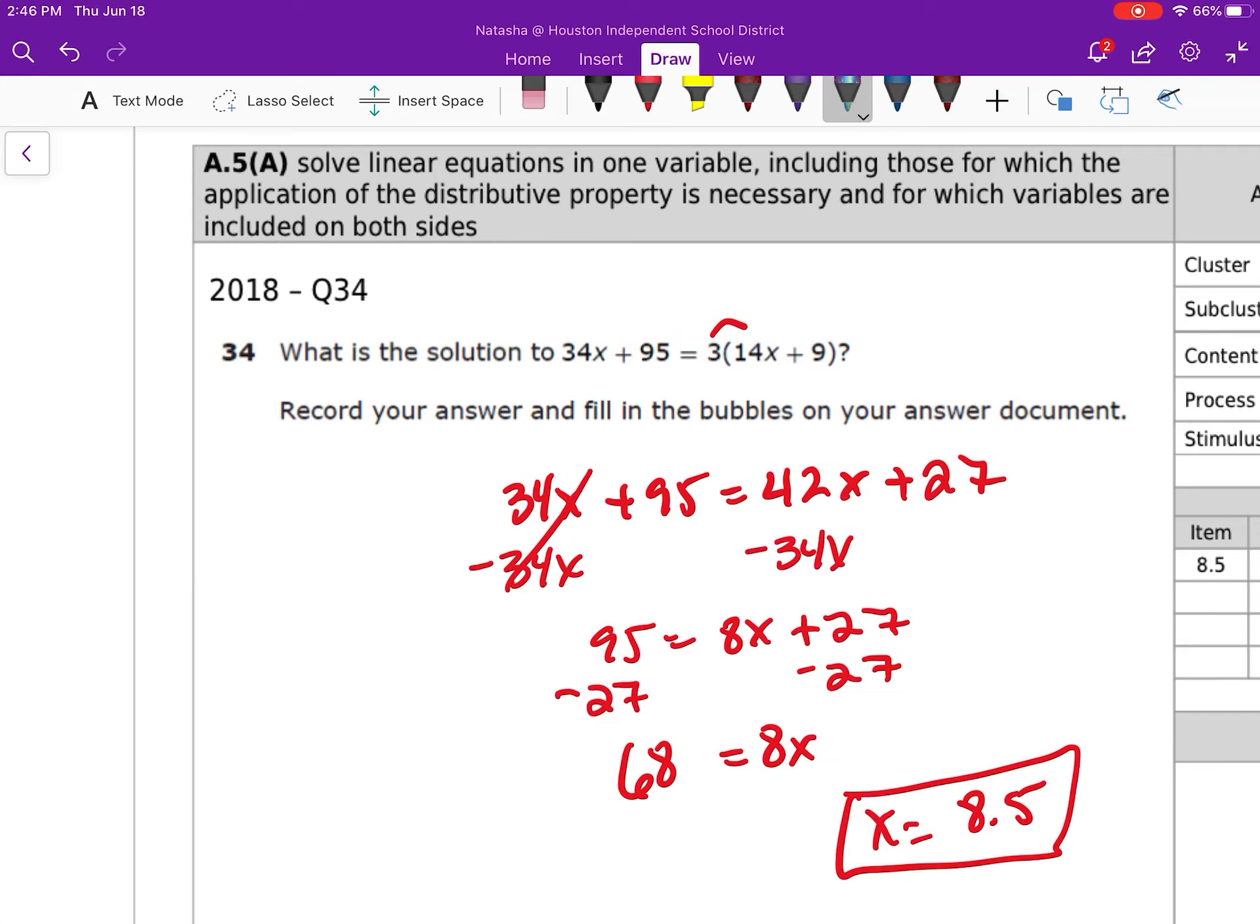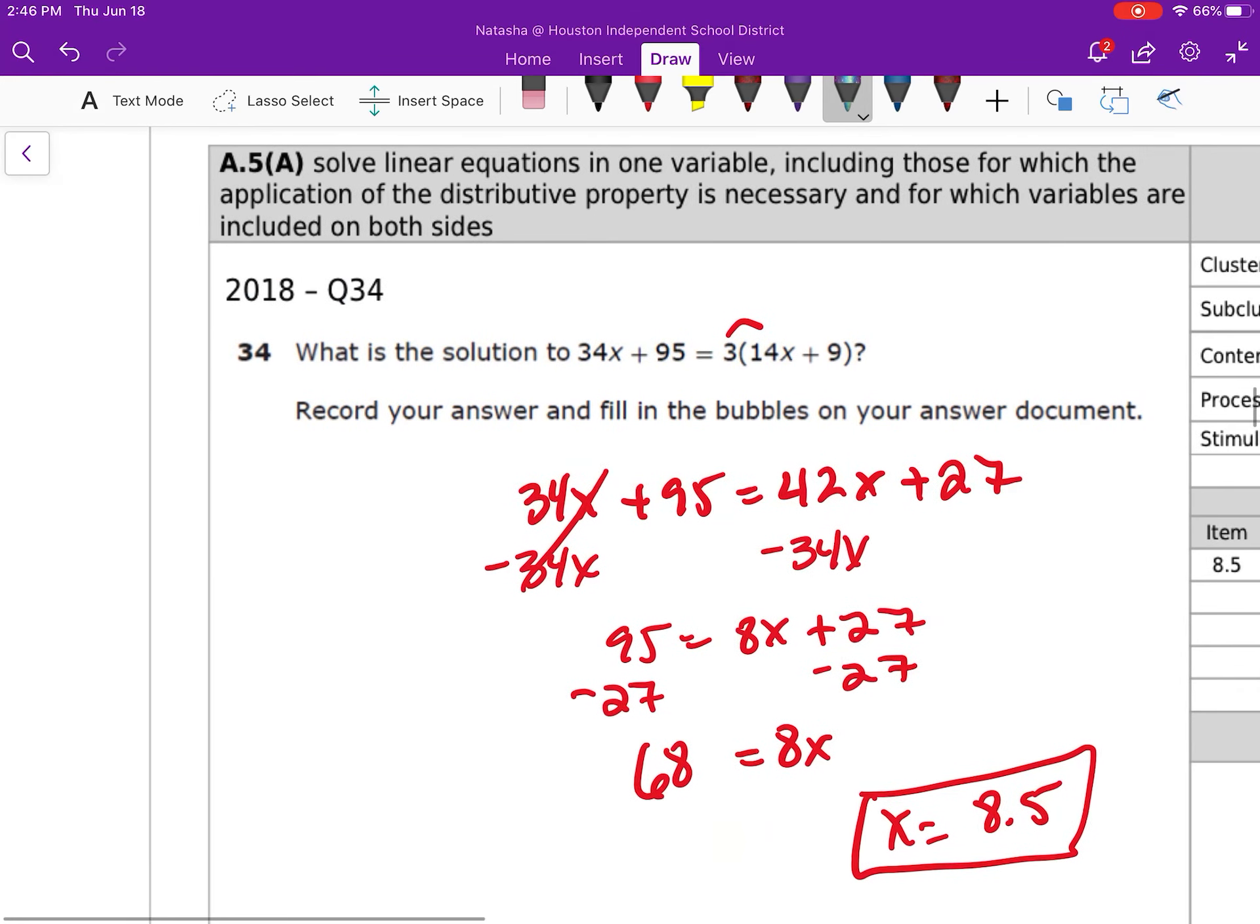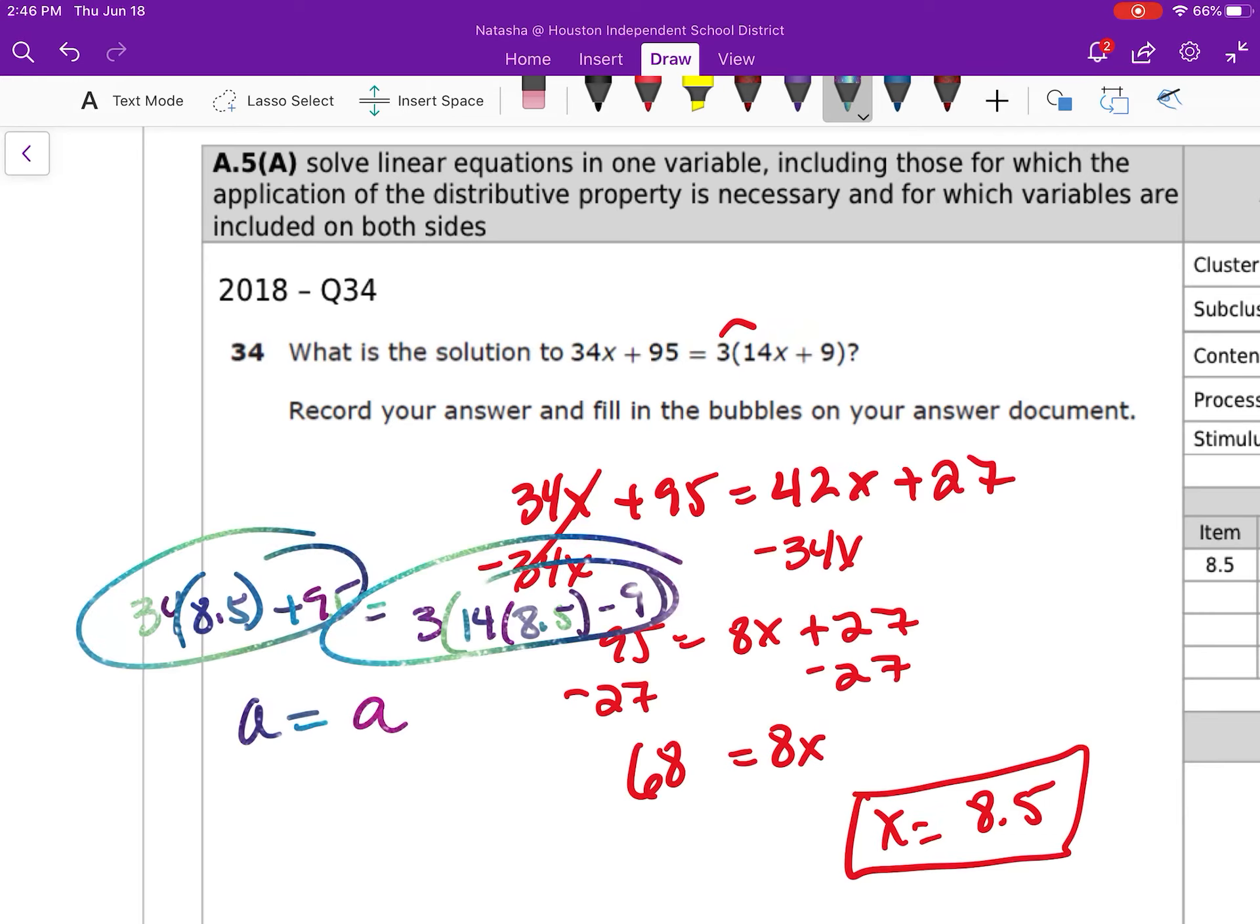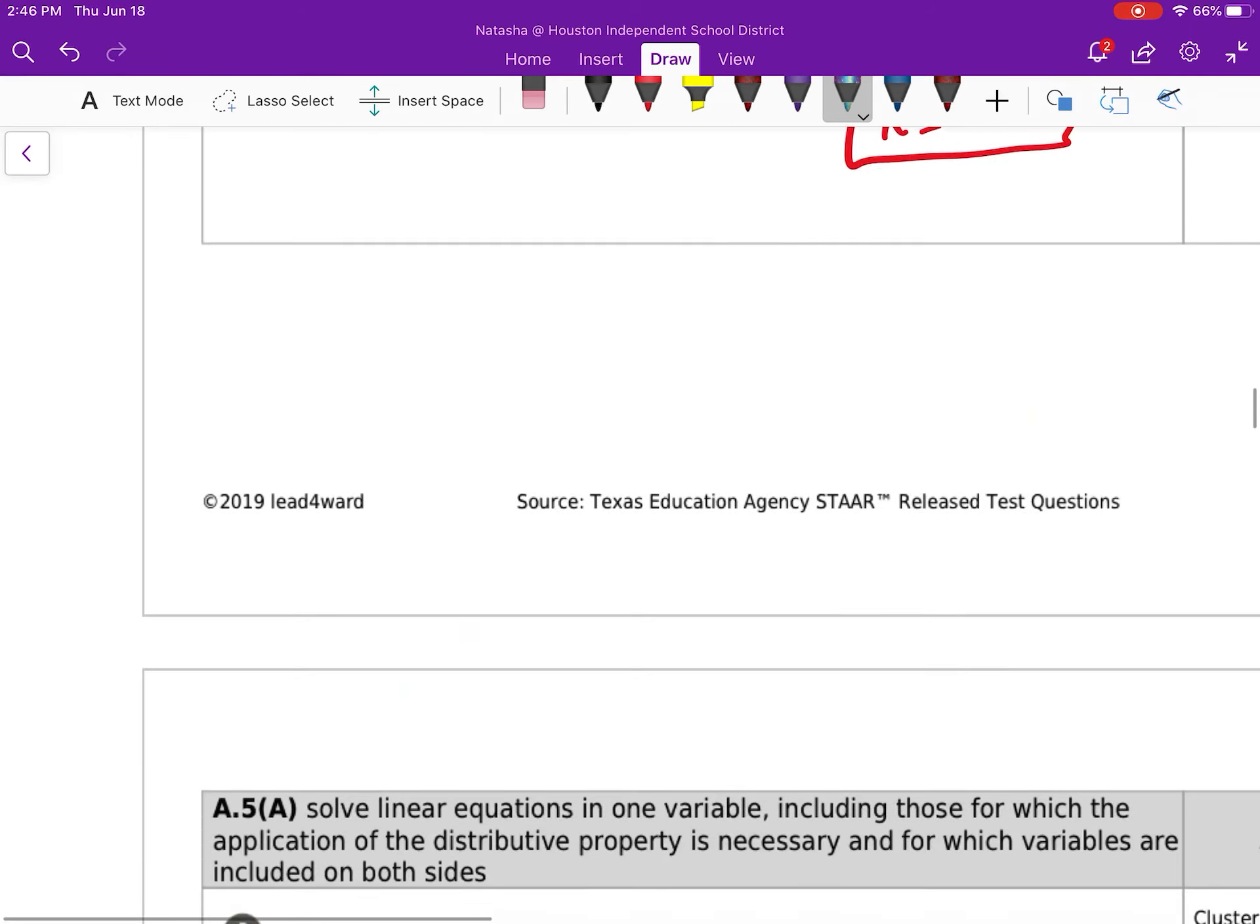Just as a side note, if you wanted to check your answers, you could plug that back in for X. So you would say 34 times 8.5 plus 95, and that's equal to 3 times 14 times 8.5 minus 9. And if you combine these and solve, that should give you A is equal to A. Whatever the sum is here and whatever that sum ends up being, that should give you equivalent statements on each side.